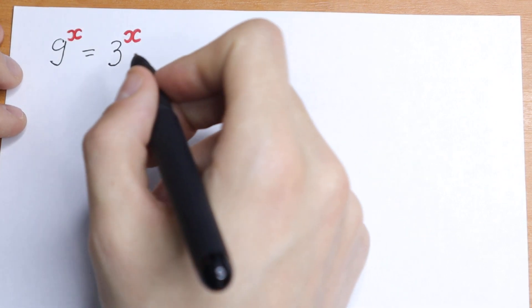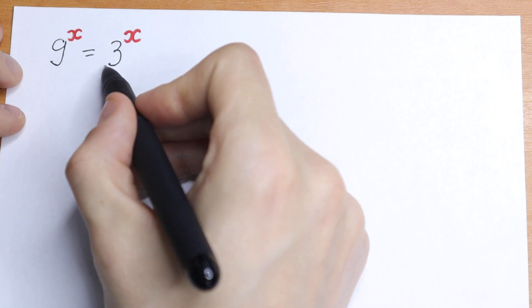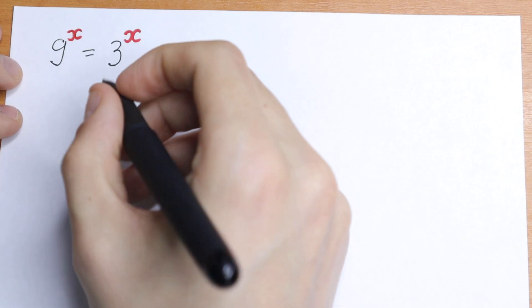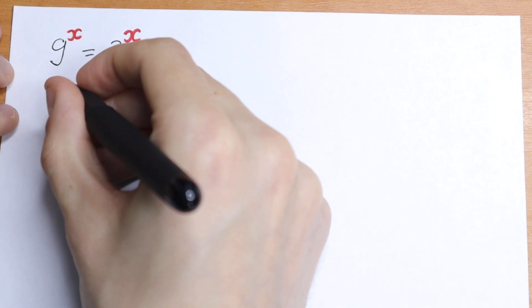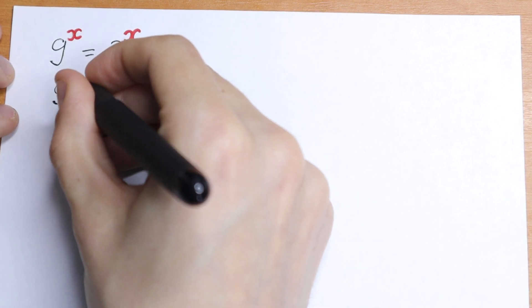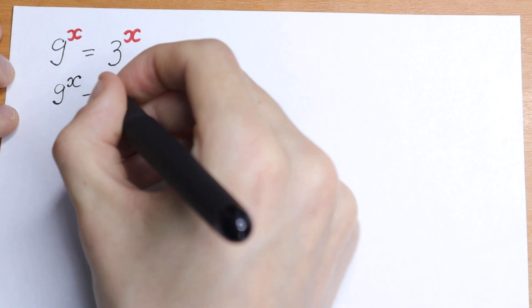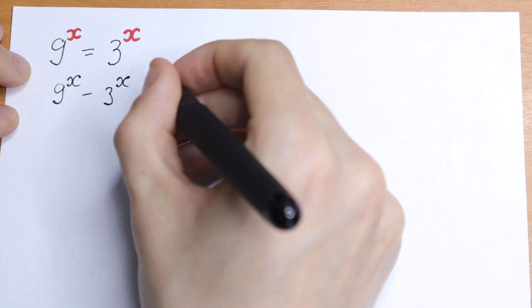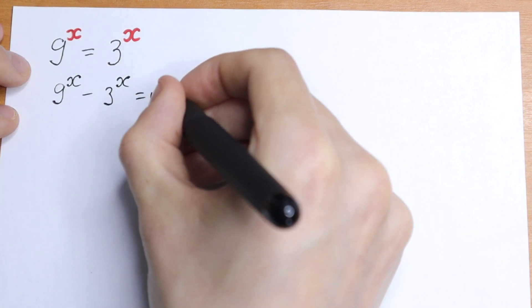On the first side, let's bring this 3 to the power x to the left. What we will have? We will have 9 to the power x minus 3 to the power x equal to 0.